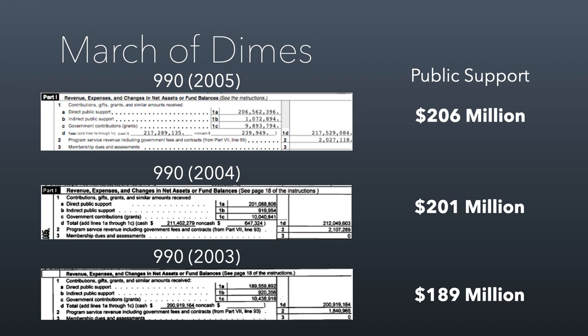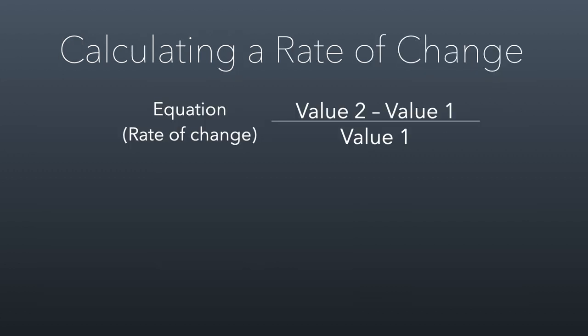Before we get to calculating real versus nominal dollars, I want to introduce a rate of change calculation. This is really simple arithmetic to track how much something changes by a percentage over time. You take the later value, value 2, subtract from it value 1, the original value, and then divide the result by value 1, and that gives you the percentage by which something has changed.